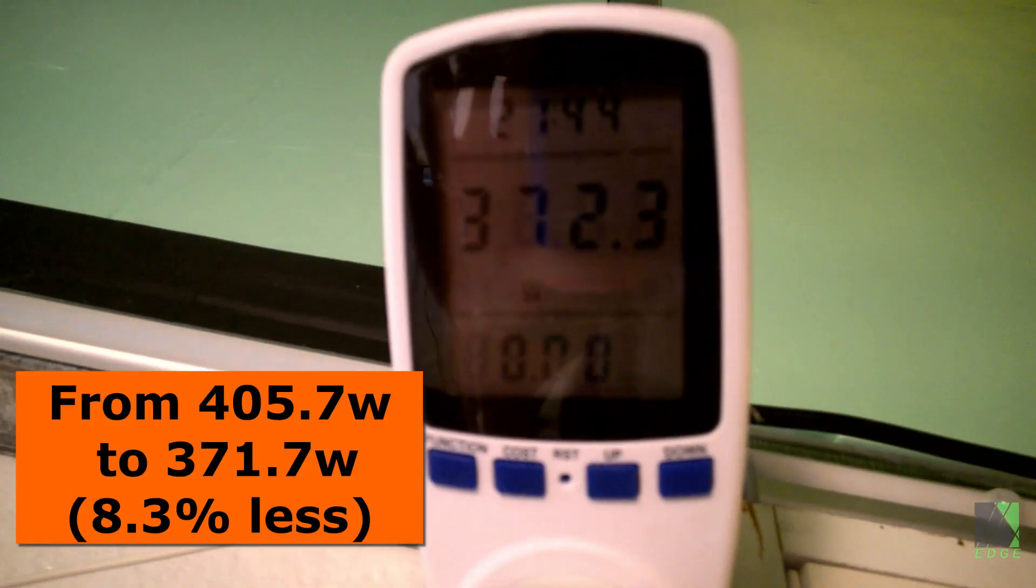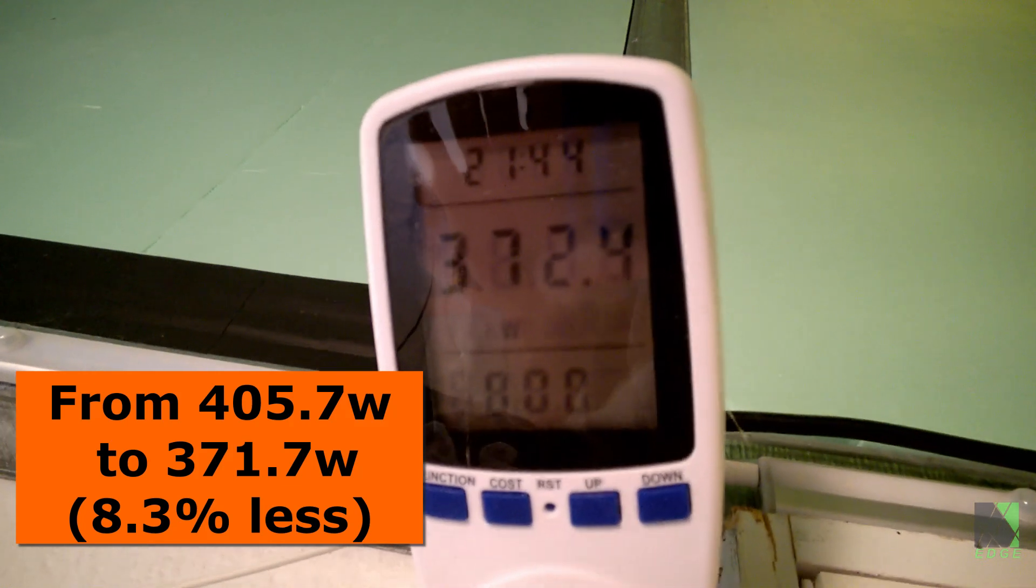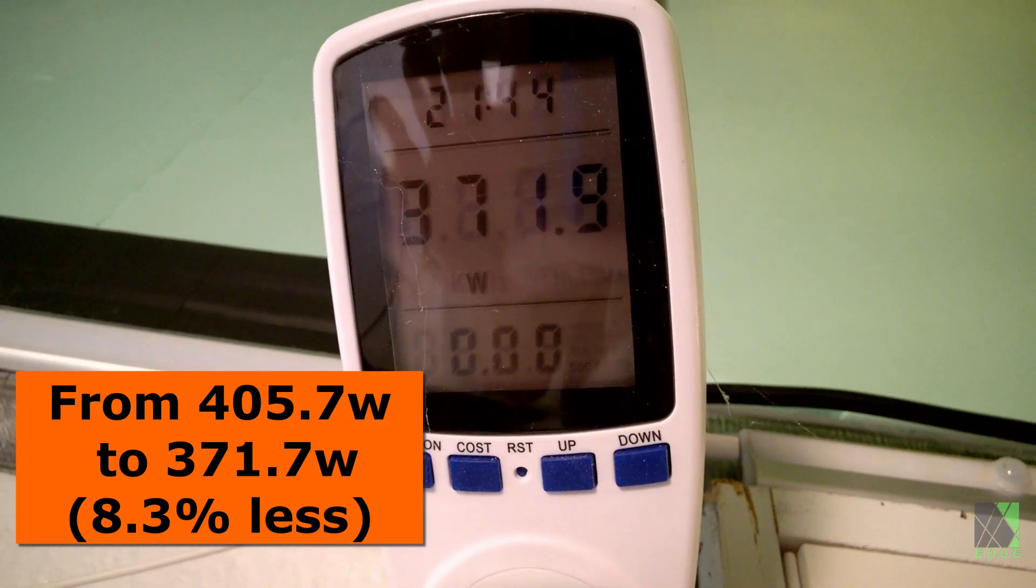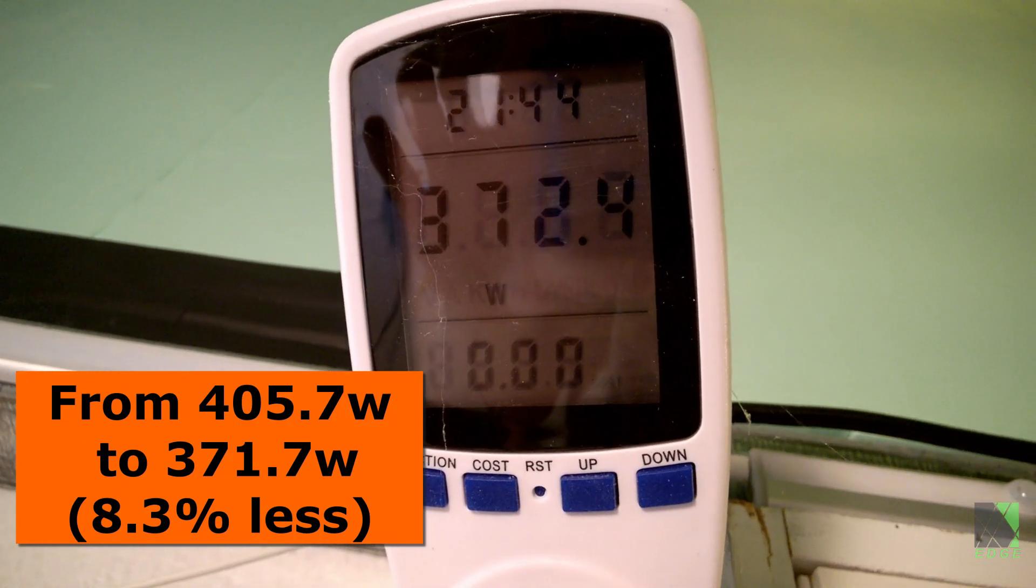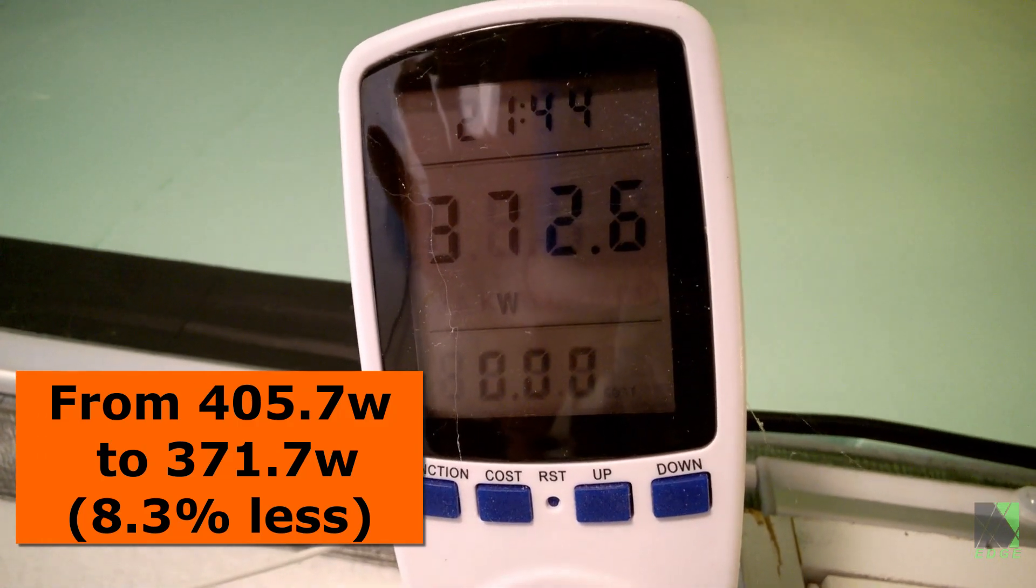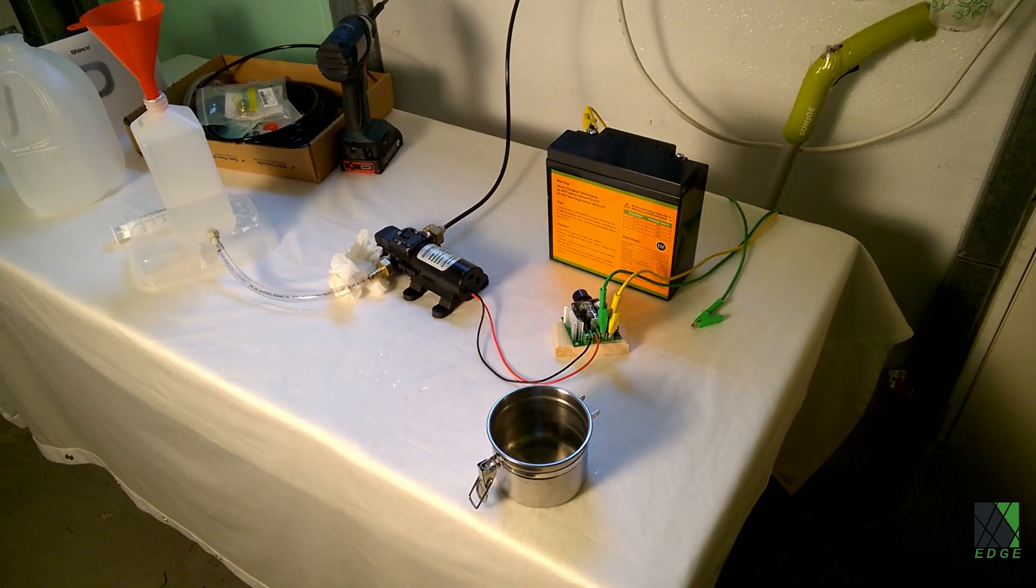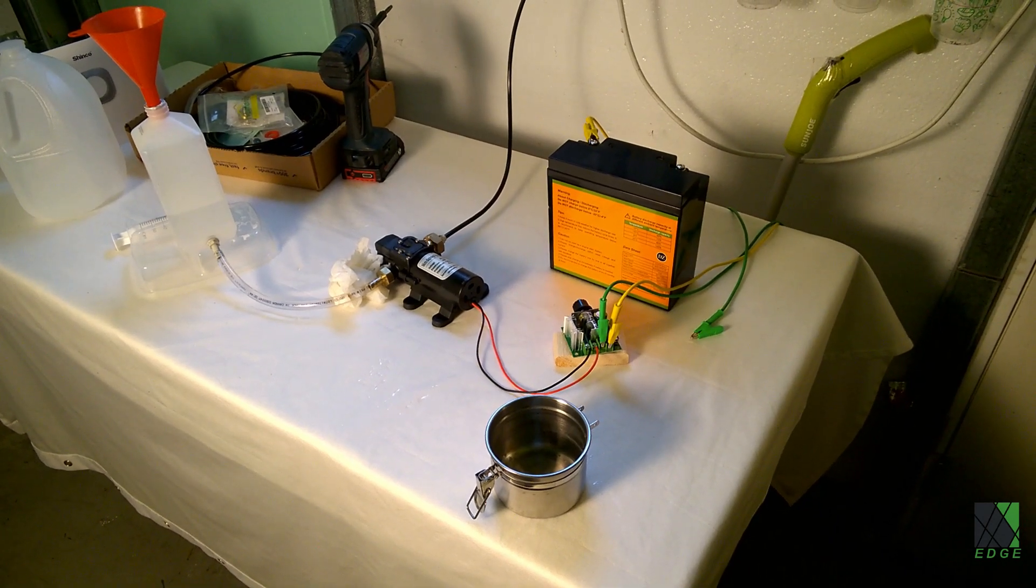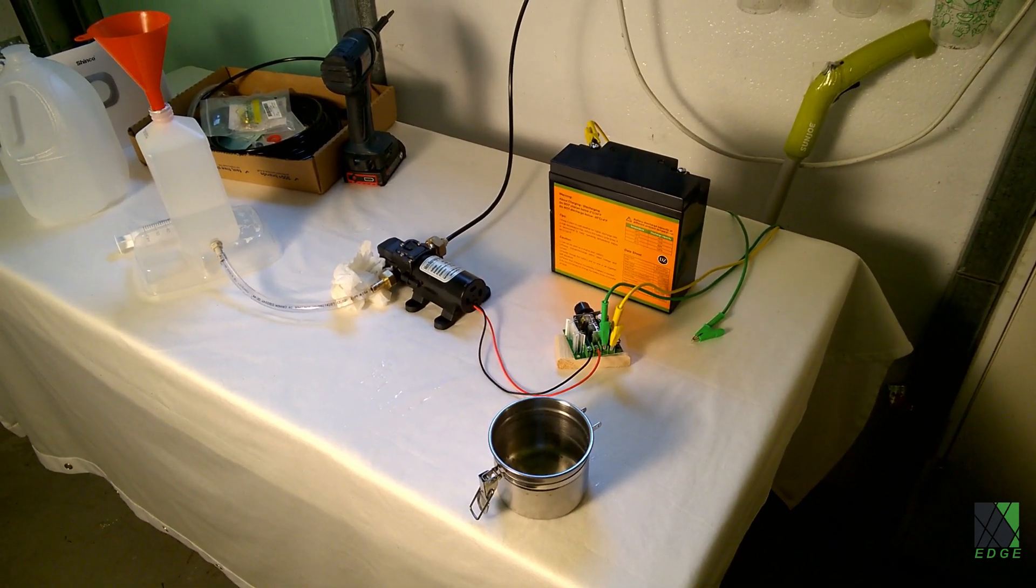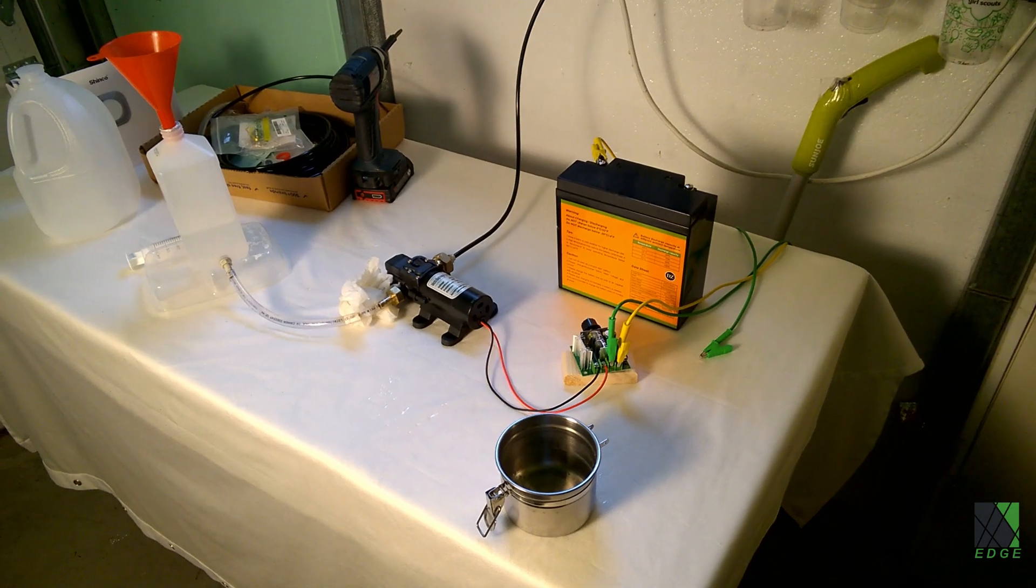After the misting starts, look what happens to the wattage readout. In my experience, this sort of technique does not reduce the amount of cool air you get out of the air conditioner, it just reduces the wattage that it operates at.